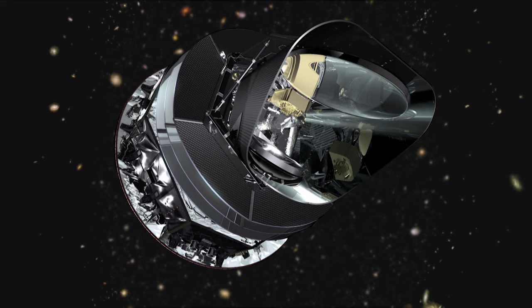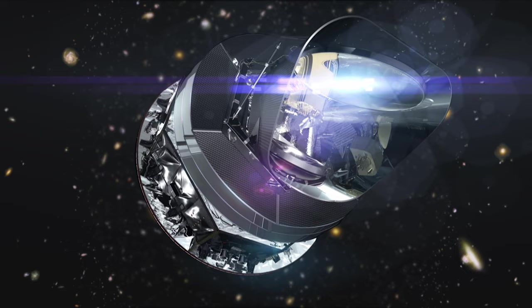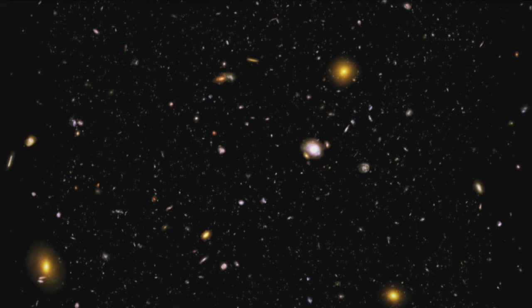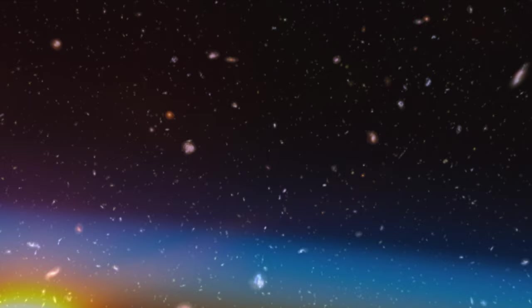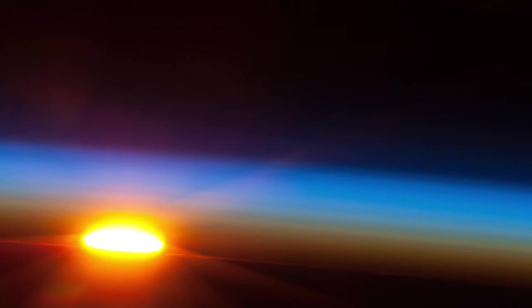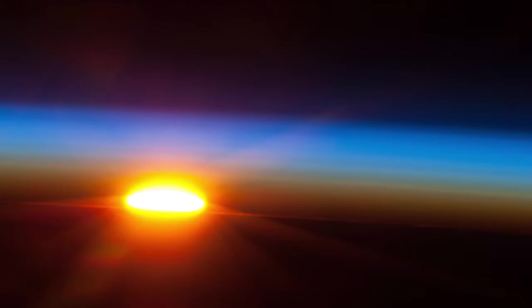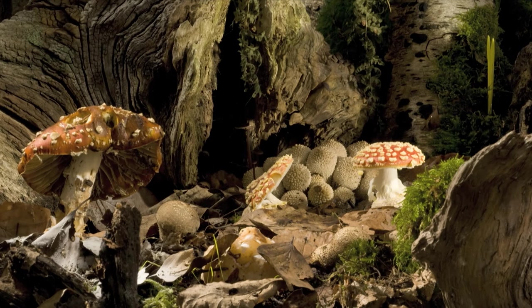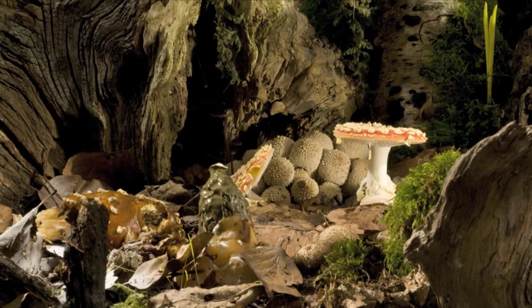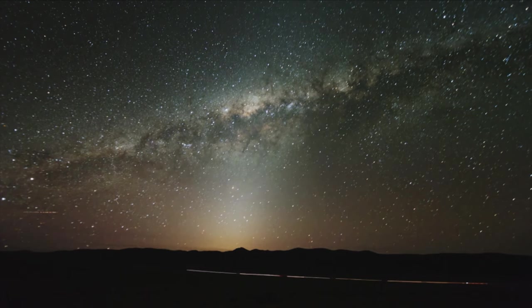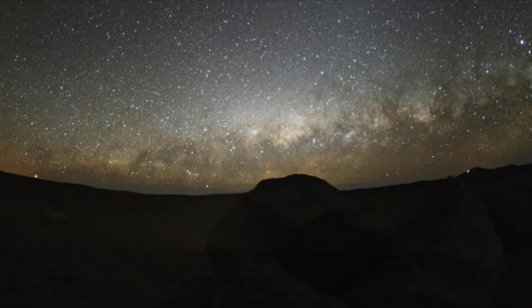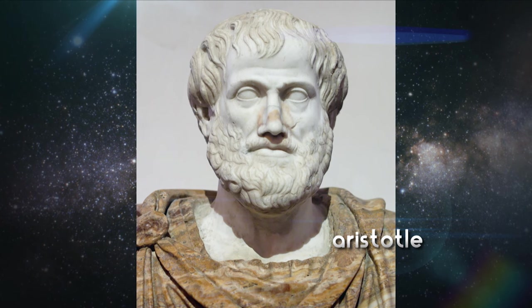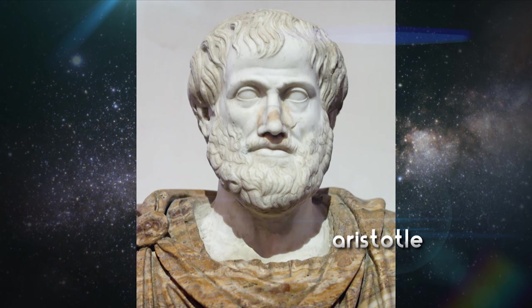But if Planck can look back to a time when all of space was filled with a white-hot gas, then why doesn't the sky look white now? The answer to that question challenges one of our deepest intuitions about the universe. The idea that it's always been here. In ancient times, looking into the heavens was like coming face to face with eternity. Perhaps that's because here on Earth, time brings growth and decay. While up above, the stars appear timeless. Aristotle, the most influential of the ancient thinkers, thought he had proved the universe was eternal. For him, the notion that there could be nothing before there was something, offended reason itself.